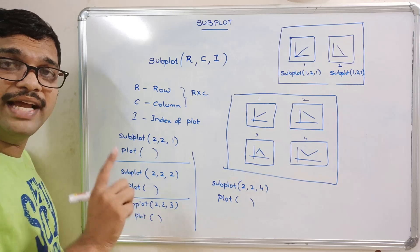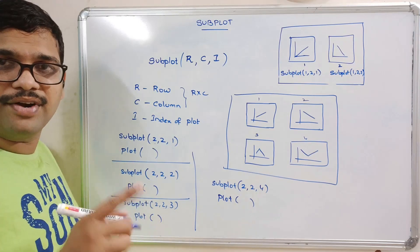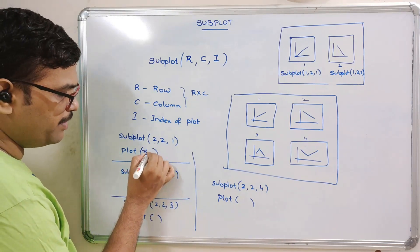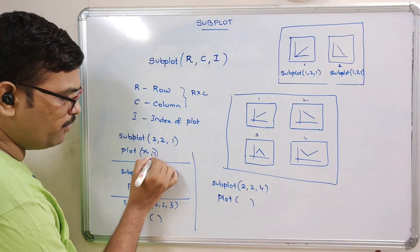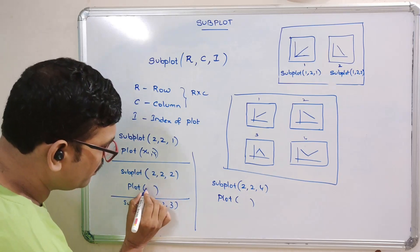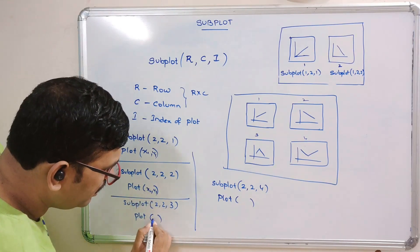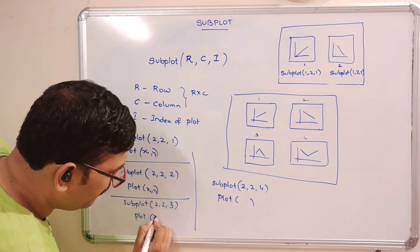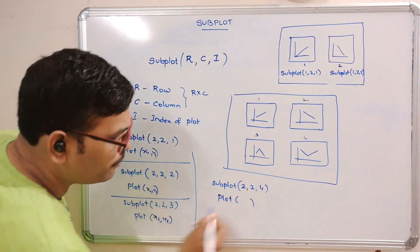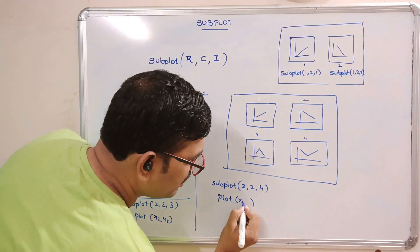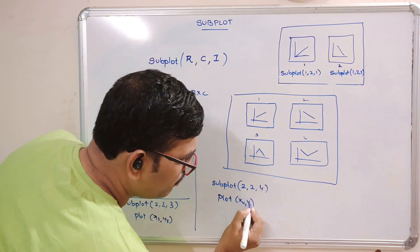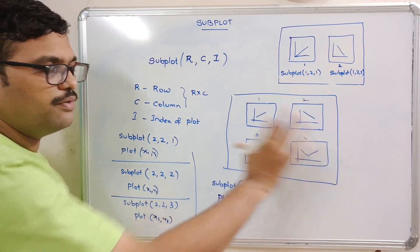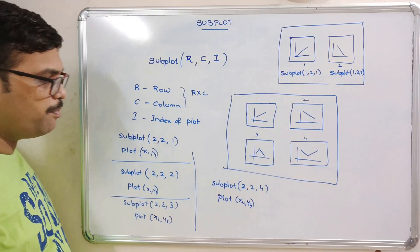The plot function is the same across all subplots, but x and y can be different. Here you can write x1, y1 for the first plot, x2, y2 for the second, x3, y3 for the third, and x4, y4 for the fourth plot. Like this we can represent four plots in a single figure.